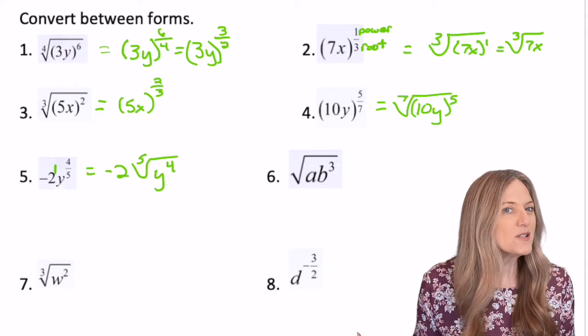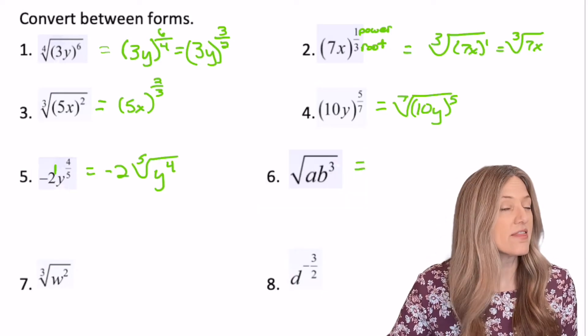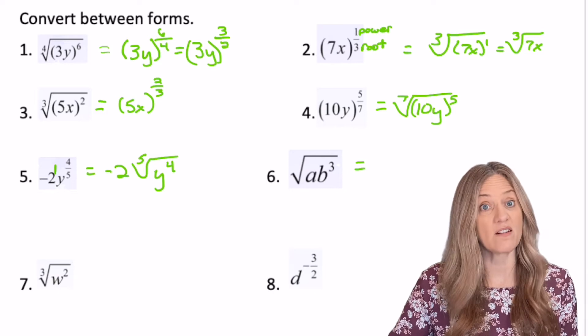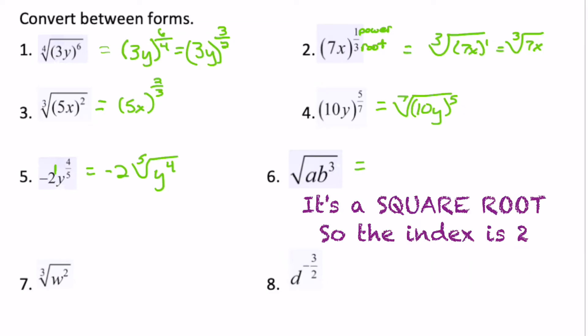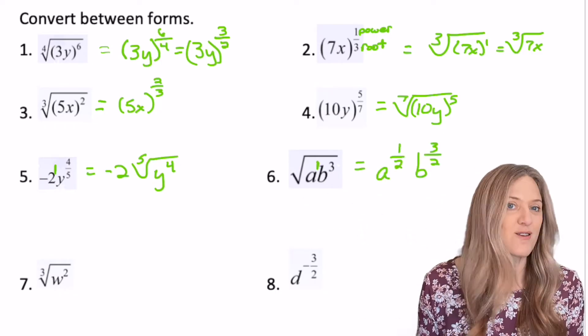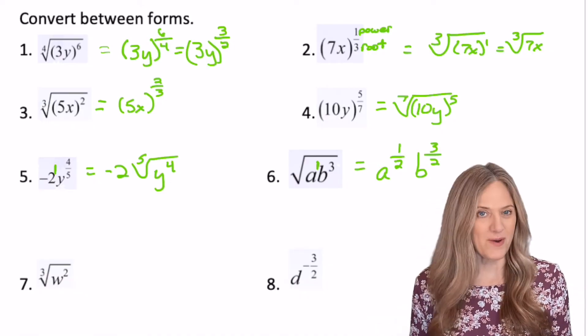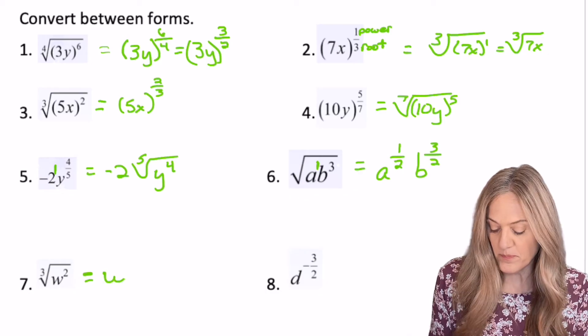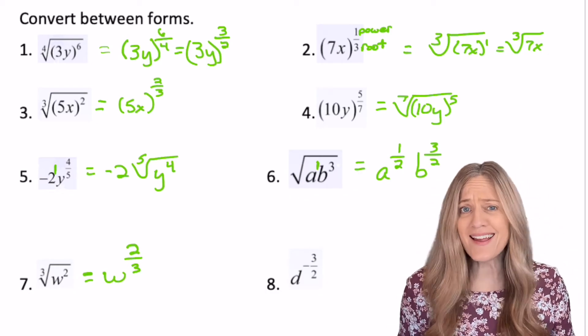Do you have some way to always remember where to put the root and where to put the power? Be real careful. Think about number six and convert from radical to exponent. A was not raised to the third power. A was to the first power. So A to the one half times B to the three halves. And then, of course, on number seven, boom, W to the two thirds. Number eight, negative three halves.